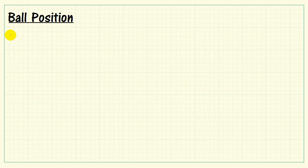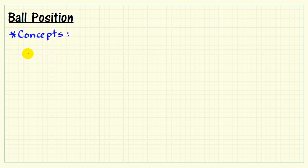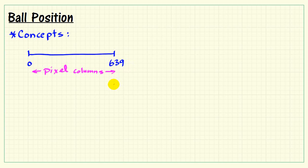Let's talk about the video signal generator, especially the main idea, which is the position of our bouncing ball. The fundamental concept is that we need a value to be effectively going back and forth between our pixel columns. We have a total of 640 of those.